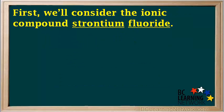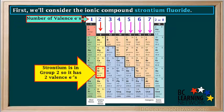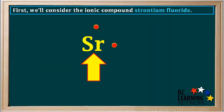First, we'll consider the ionic compound strontium fluoride. Strontium is in group 2, so it has two valence electrons. So we can represent a neutral strontium atom like this.